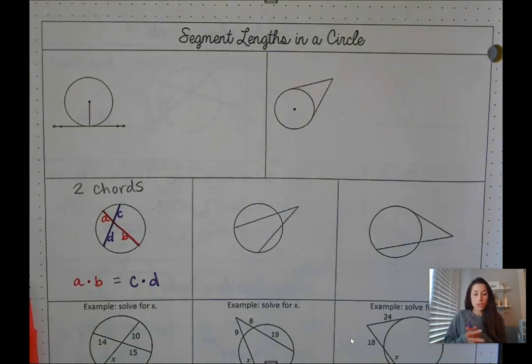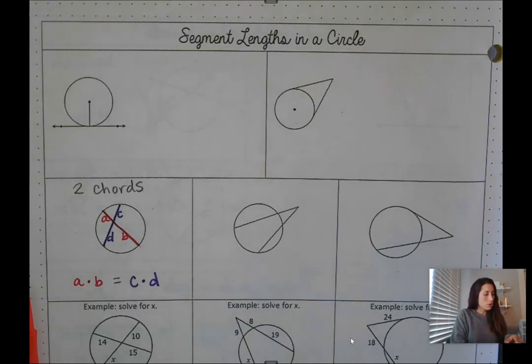So the product of two chords are equal, so that should have been lesson seven.